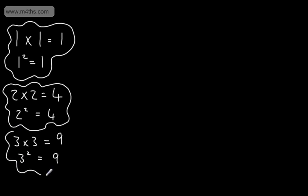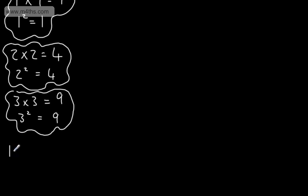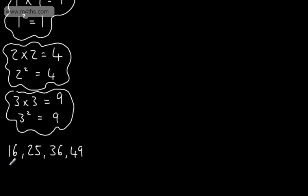We could keep going with this. 4 squared, or 4 times by 4, is going to give us 16. We could have 5 times by 5, which is 25. So 16 is a square number, 25 is a square number, 36 will be a square number as it's 6 times by 6. 49 is 7 times 7. Then we'll have 64. We will have 81.